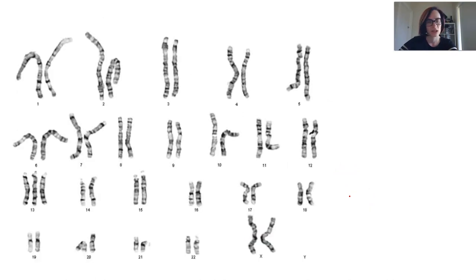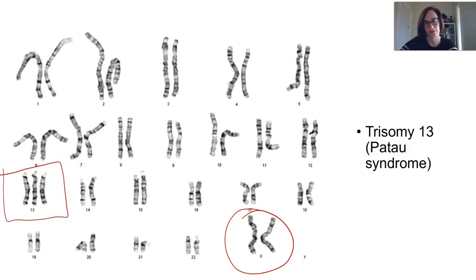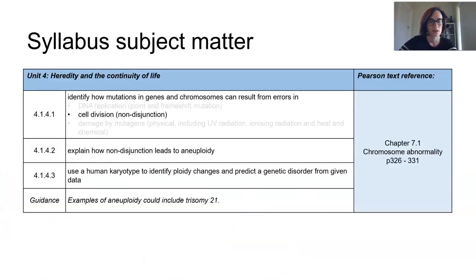And this is a biological female. We can see with the two X's and they have trisomy 13. This is also known as Patau syndrome. So their karyotype there would be 47XX plus a 13. So please have a quick read. It's really important that you understand non-disjunction and aneuploidy and be able to use a karyotype to identify these ploidy changes.